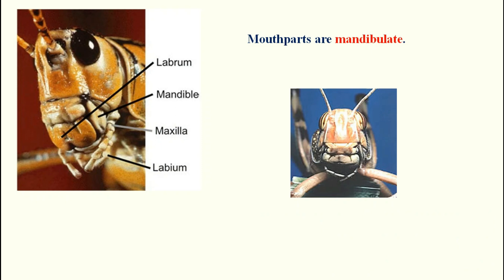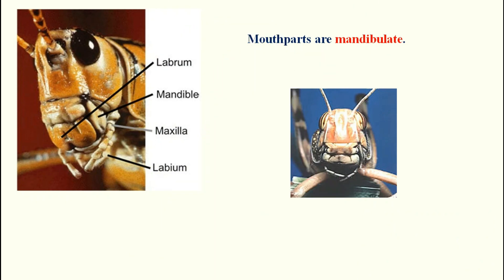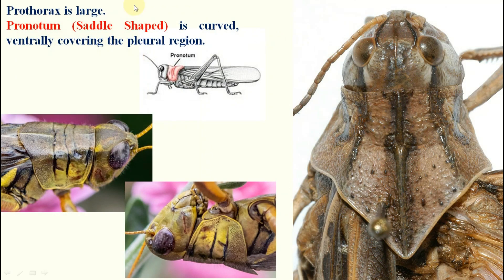In the female, a genital organ is present on the eighth and ninth segments; in the male, on the ninth. You can make 10 to 12 points for full marks. For example, if you incorrectly write that grasshoppers have piercing and sucking mouth parts, you will only get two out of ten. The mouth parts are mandibulate.